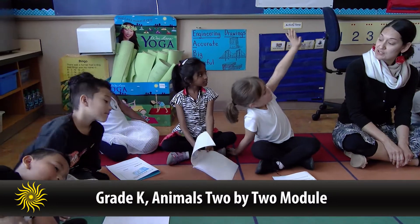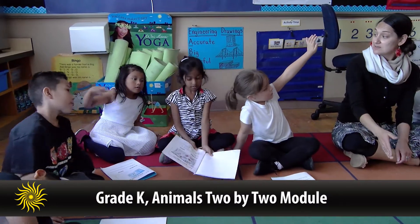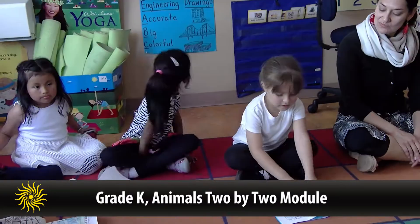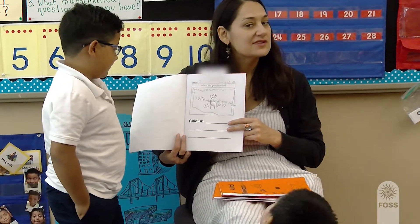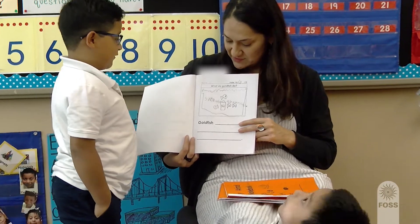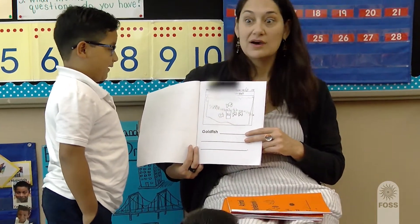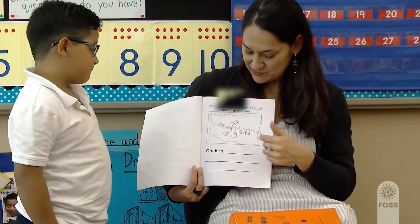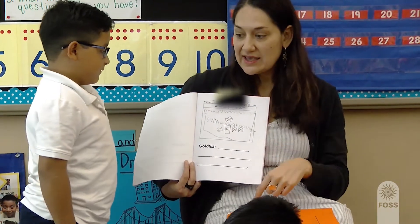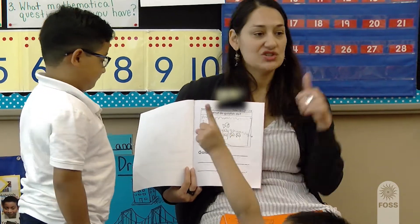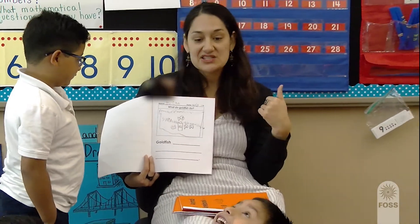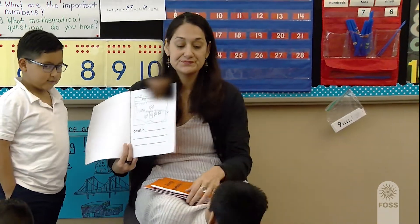Students discuss and refine their notebook entries: 'The goldfish swam through the tunnel.' One student described observations including the fish being inside, on top, on the side, and behind the tunnel — goldfish swimming all kinds of places: through, around, behind. Next step strategies provide an opportunity for students to revise their thinking based on class discussions and shared ideas.